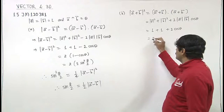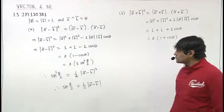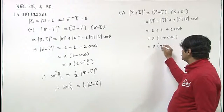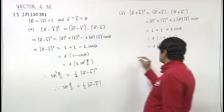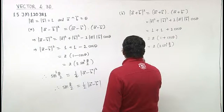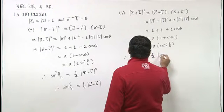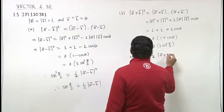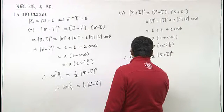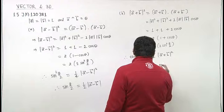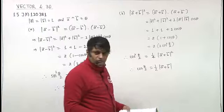Again taking two as a common factor, we get two times one plus cos theta. Now one plus cos theta equals two cos squared theta by two, so we have cos squared theta by two equals one by four times magnitude of a plus b whole square. Therefore cos theta by two is one by two times magnitude of a plus b, which is what we had to prove.